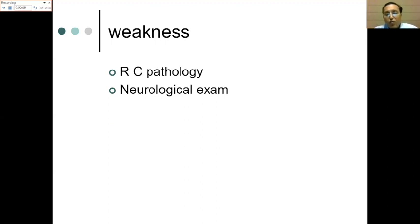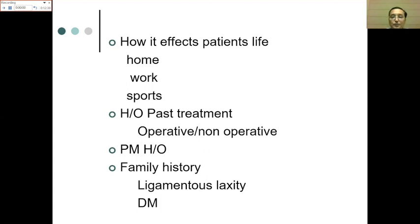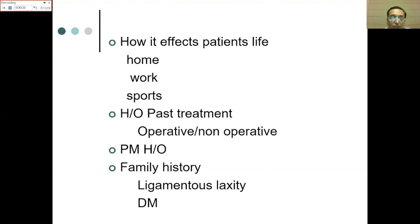Weakness can also be a sign of instability, but primarily if there is a history of injury followed by weakness, we look at rotator cuff tear — a typical history of a click after which the patient cannot lift the arm. If there is no history of trauma but signs of radiation or tingling, a neurological pathology should be kept in mind and a complete neurological examination performed. Always assess how the problem affects work, home life, and sports.